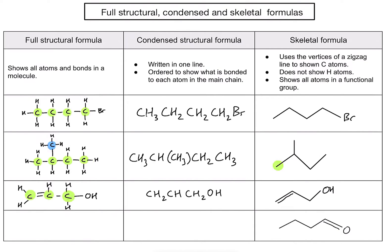Fourth example — starting with a skeletal formula and working backwards. I have four carbons and then a double bond to an oxygen. Drawing the full structural formula: carbon, carbon, carbon, carbon, with a double bond to an oxygen. Since the skeletal formula doesn't show hydrogens, I add them so each carbon has four bonds — the first carbon needs three, the second two, the third two, and the fourth one.